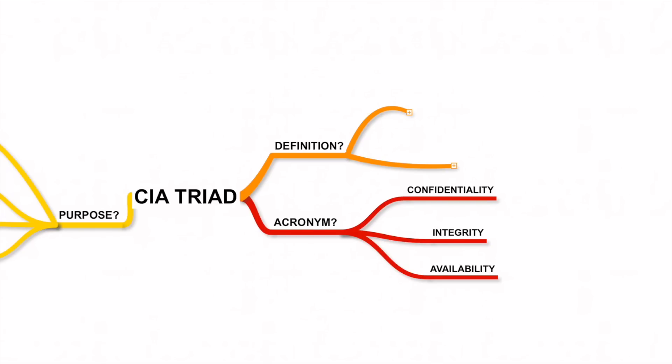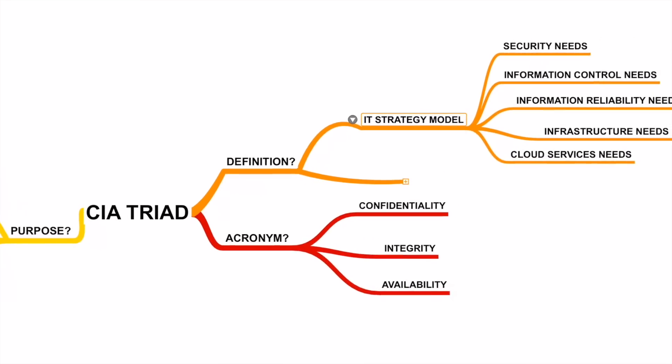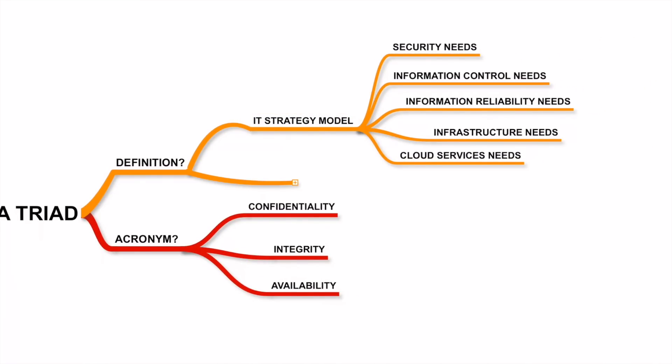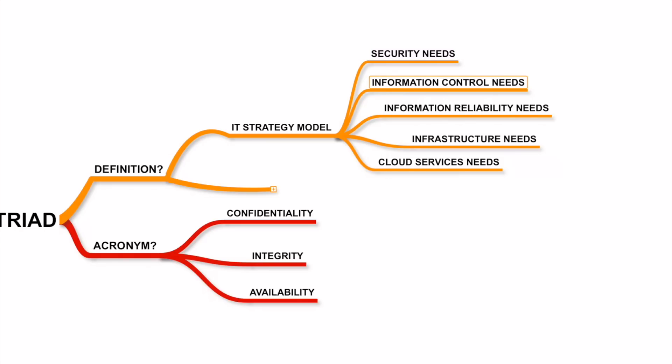The CIA Triad is popularly known as an information security model, and most discussions surrounding this model are based on security. However, the terms cover all aspects of IT operations. I would rather call it an IT strategy model.